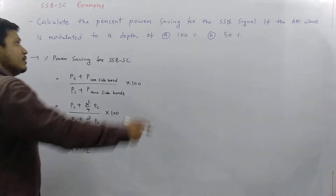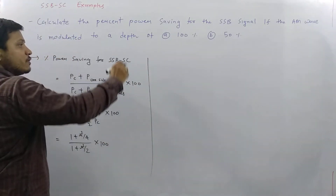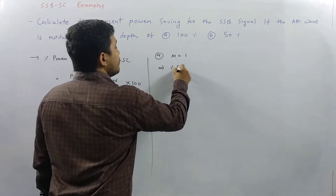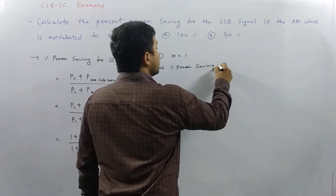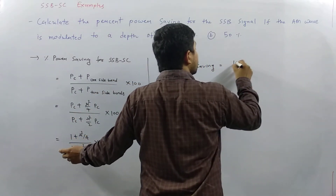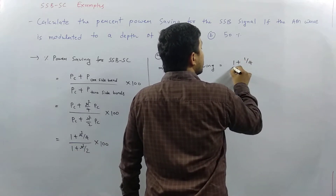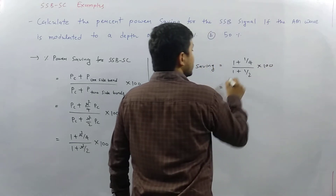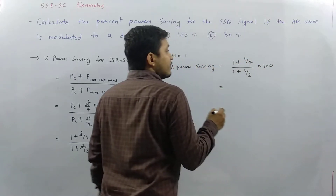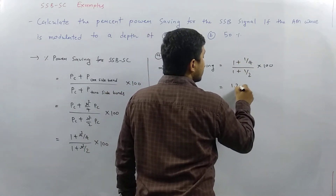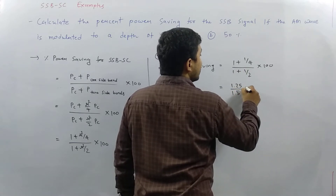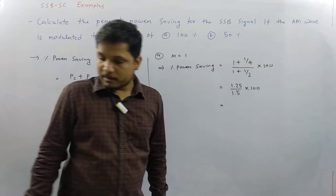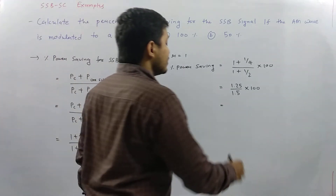Now we apply this formula for both cases. For case A, mu equals 100%, which means mu equals 1. Applying the formula: 1 plus mu-squared by 4 gives 1 plus 1/4 which is 1.25, and 1 plus mu-squared by 2 gives 1 plus 1/2 which is 1.5. So we get 1.25 divided by 1.5, times 100, which gives 83.33%.